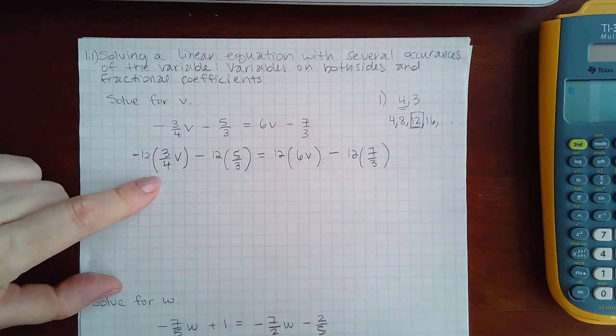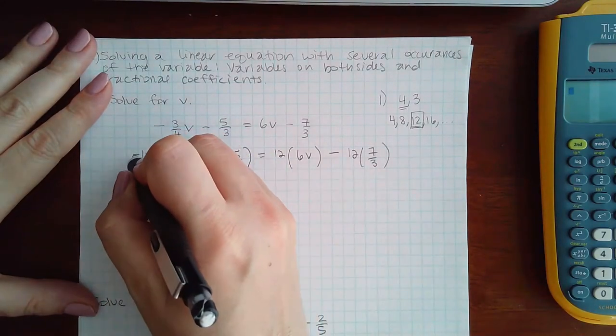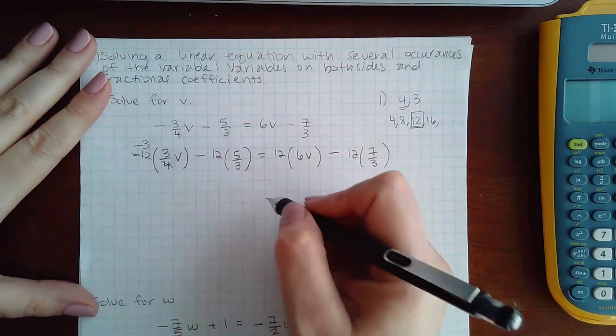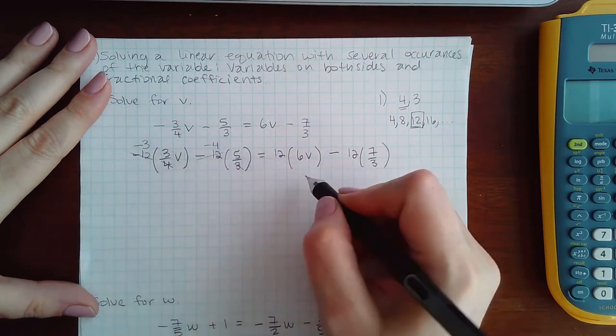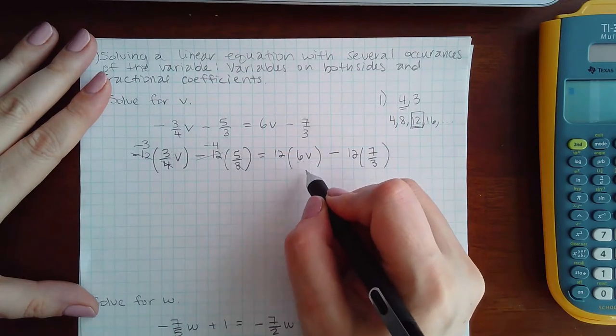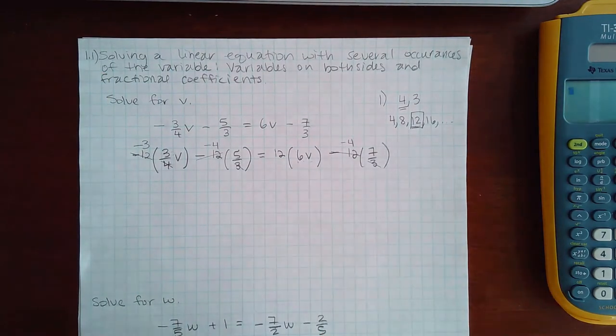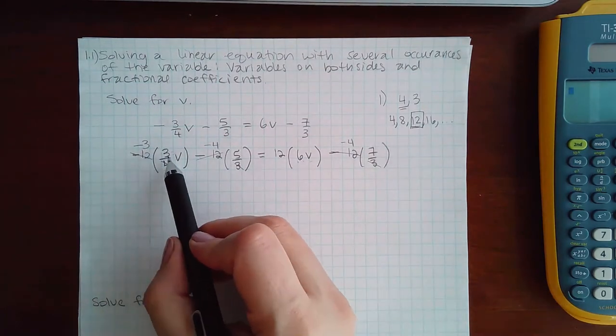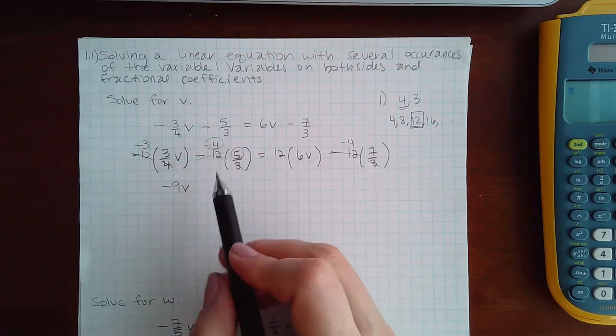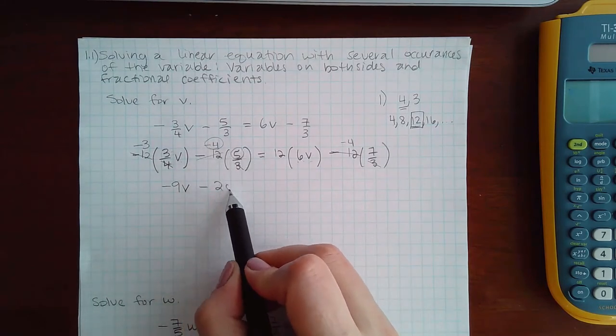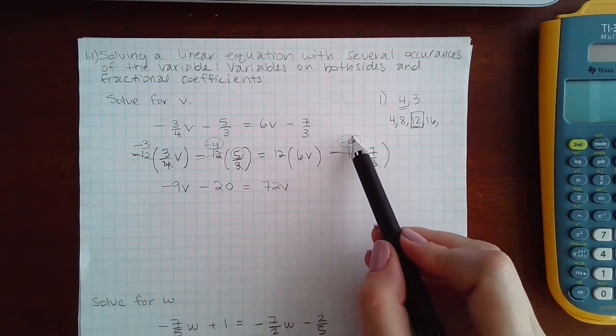So then 4 goes into negative 12 a negative 3 times. 3 goes into negative 12 negative 4 times. Here there's nothing to cancel so the 12 stays. 3 goes into negative 12 negative 4 times. So you end up with negative 3 times 3v which is negative 9v, you end up with negative 4 times 5 which is negative 20, you end up with 12 times 6v which is 72v, and you end up with negative 4 times 7 which is negative 28.